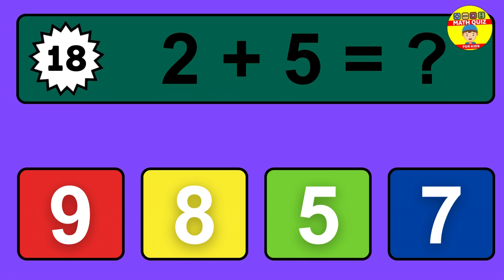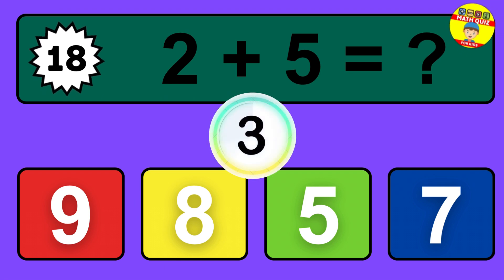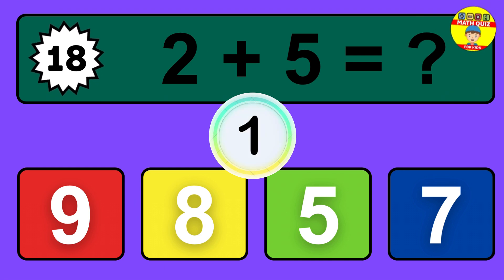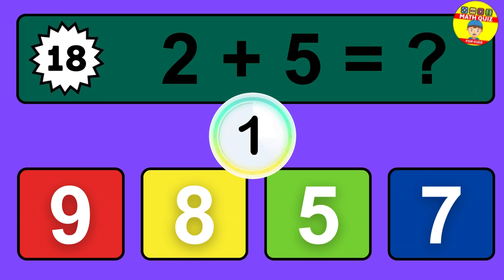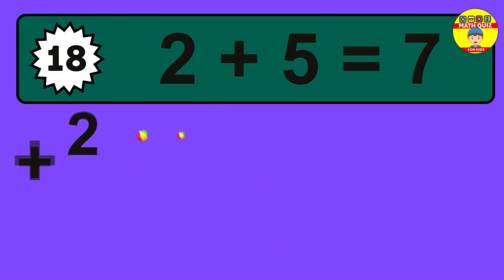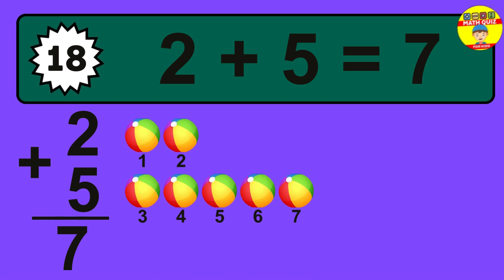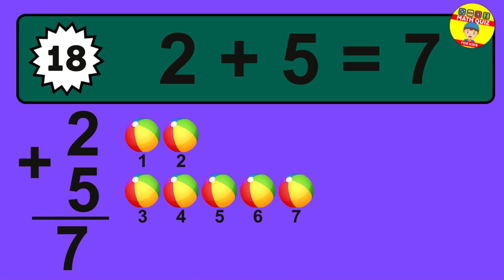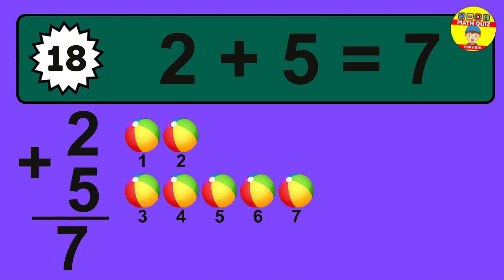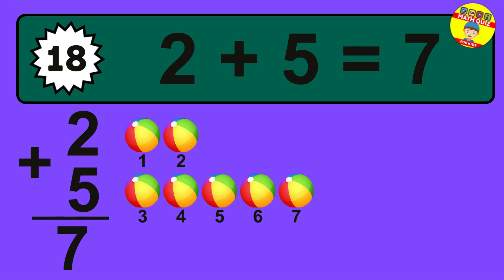Question 18. 2 plus 5 equals what? The answer is 2 plus 5 is 7. Let's count it: 1, 2, 3, 4, 5, 6, 7.